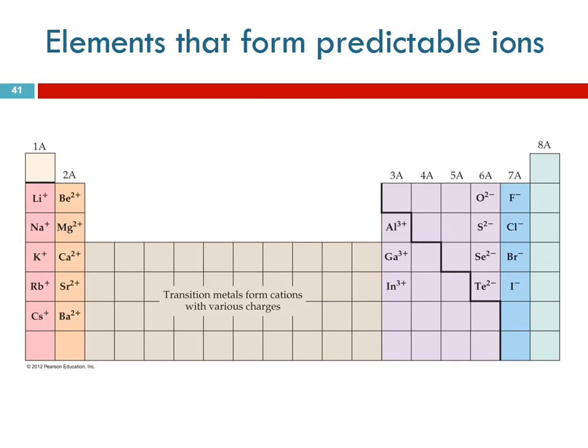What about these guys over here? How many valence electrons does lithium have? One. How many does sodium have? One. So if it wanted to be like argon, if sodium wanted to be like argon it would have to gain seven electrons. That's a lot of electrons for it to gain.